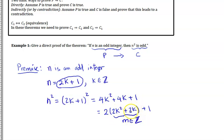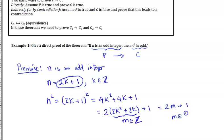We can argue that M is an integer because K is an integer, so 2K is an integer, K squared is an integer, 2K squared is an integer, and an integer plus an integer is an integer. Because I'm only working with K, multiplying or squaring it and adding to another integer keeps it as an integer. So N squared equals 2M plus 1 where M is an integer, which means N squared is odd. That concludes the proof.